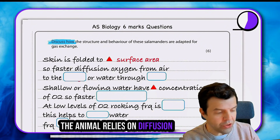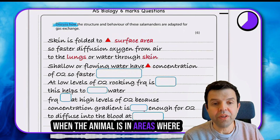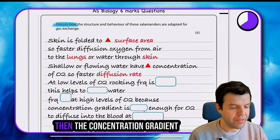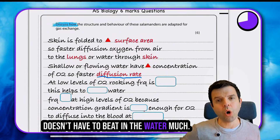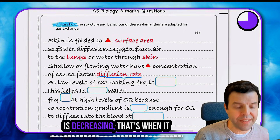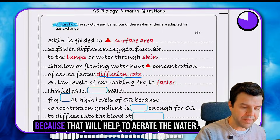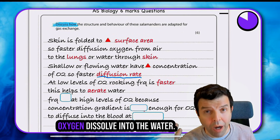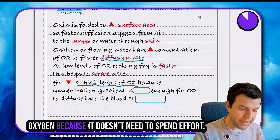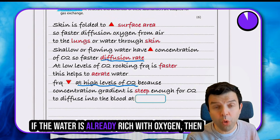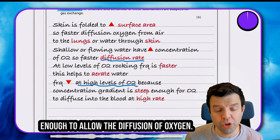The animal relies on diffusion for gas exchange through its lungs and through its skin. When the animal is in areas where there is a higher concentration of oxygen, the concentration gradient becomes steeper, and that means it doesn't have to beat the water much. However, when the level of oxygen is decreasing, it relies on itself to increase the concentration of oxygen in the water — to aerate it and let oxygen dissolve in. The frequency decreases at high oxygen levels because the water is already rich with oxygen and the concentration gradient is good enough to allow diffusion.